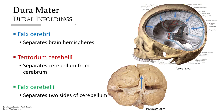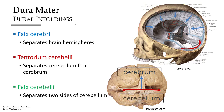The falx cerebri runs down the center of the brain longitudinally along the sagittal plane, dividing the brain into right and left hemispheres. Posteriorly, the tentorium cerebelli separates the wormy-appearing cerebrum from the stacked, layered portion called the cerebellum. The falx cerebelli divides the cerebellum into right and left sides.